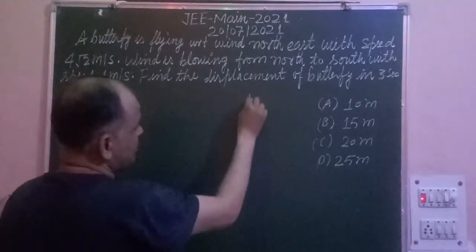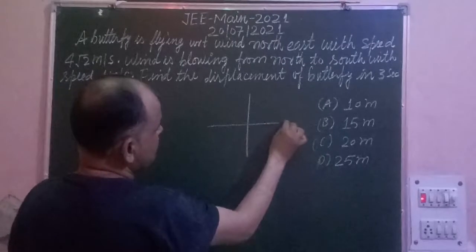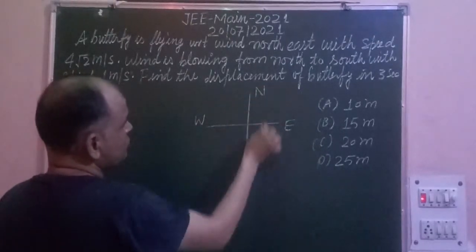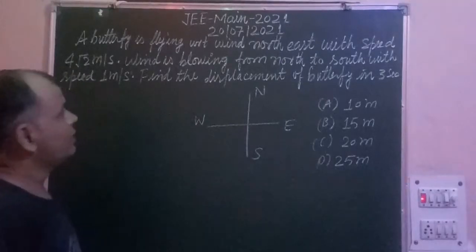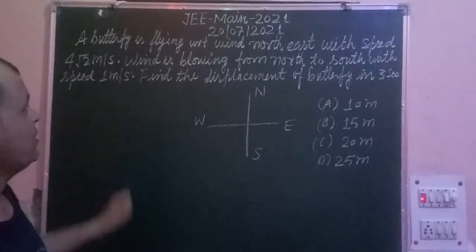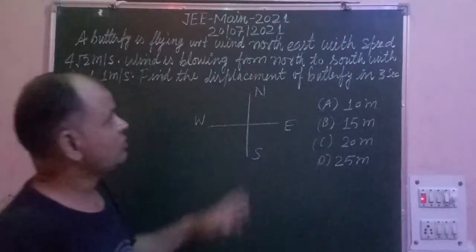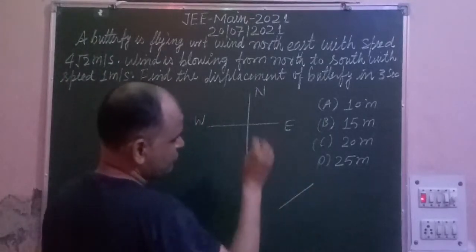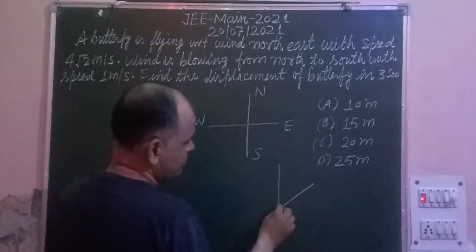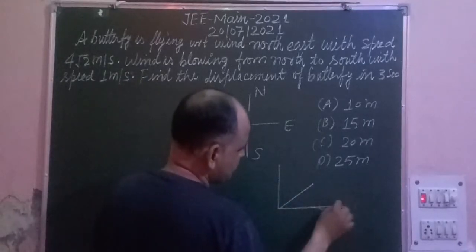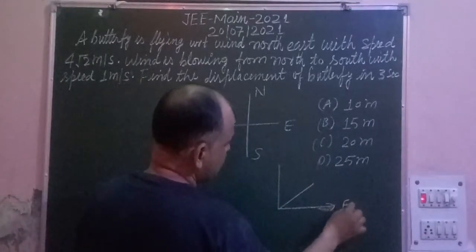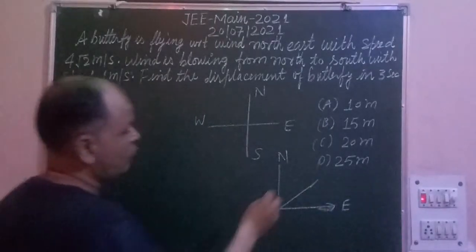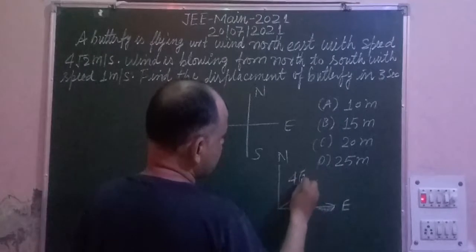First we take the directions — East, West, North, South. The butterfly is flying in the North East direction. This is the direction of the butterfly, with East here and North here. The butterfly is flying with 4√2 meters per second.